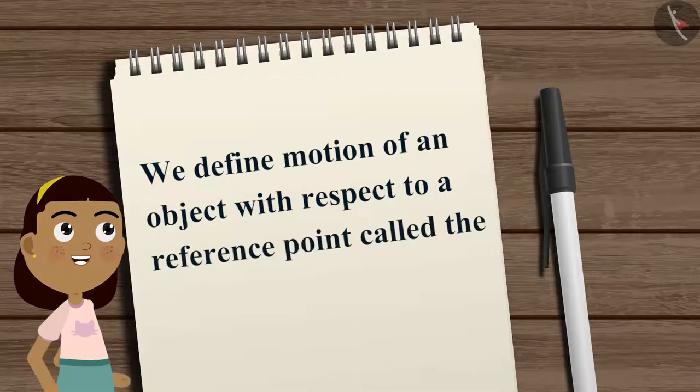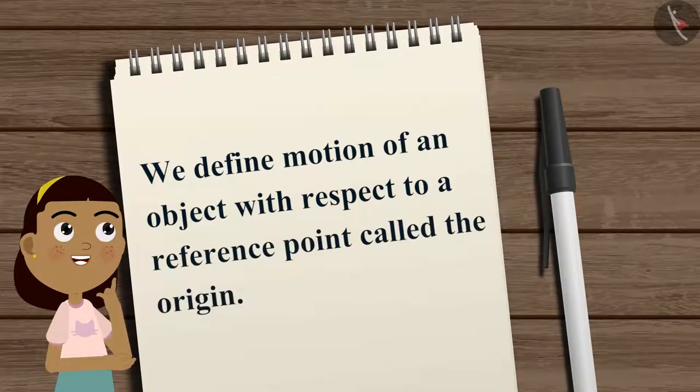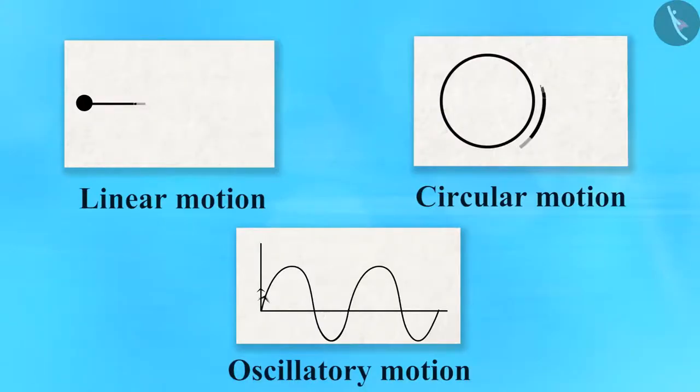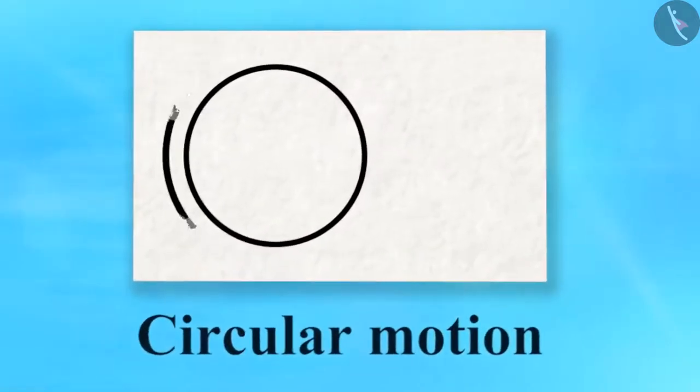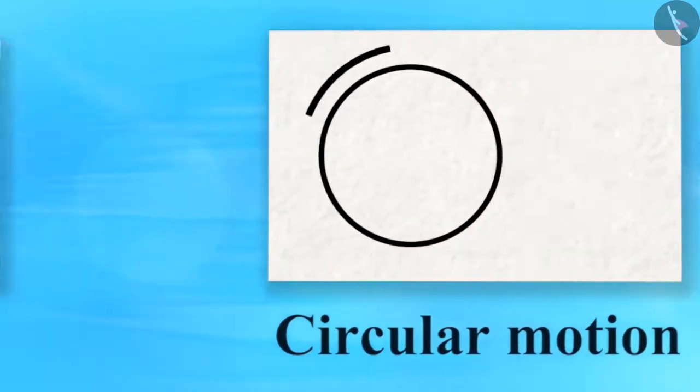It is because we define motion of an object with respect to a reference point called the origin. Motion is of many types, like circular motion, linear motion, oscillatory motion, etc.